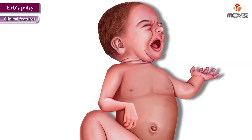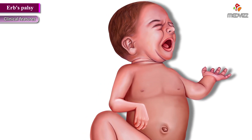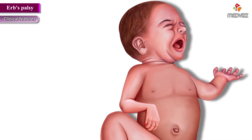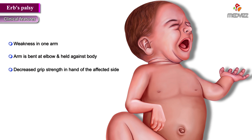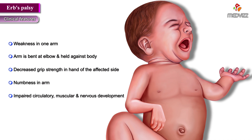Clinical features: The most common symptoms of Erb's Palsy include weakness in one arm, the arm is bent at the elbow and held against the body, decreased grip strength in the hand of the affected side, numbness in the arm, impaired circulatory, muscular, and nervous development, and partial or total paralysis of the arm.